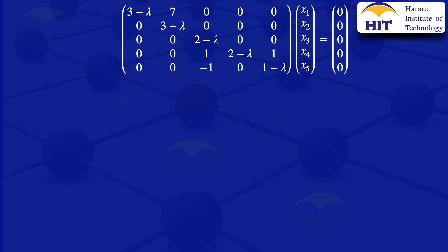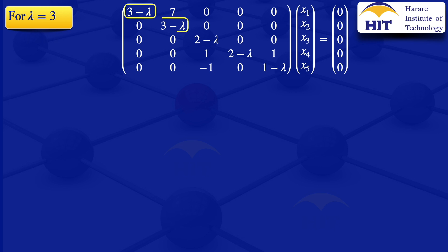We now have that equation and that is what we use to find the eigenvectors. We start by looking at the first eigenvalue lambda equals to 3, and we substitute 3 wherever we have lambda. So we substitute 3 there and get a 0; substitute 3 there and get another 0; substitute 3 there and get minus 1; substitute 3 there and get minus 1; and 3 on that part gives minus 2.